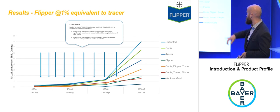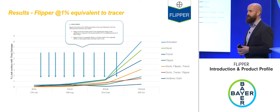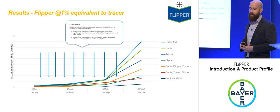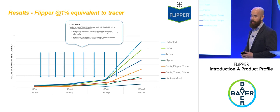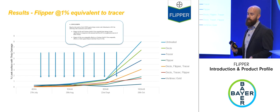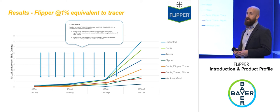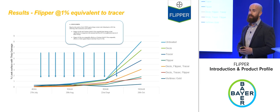The leeks trial results showed Desis providing very little control — clearly due to resistance — and also wiping out beneficial insects. Tracer (spinosad) also underperformed, again likely due to resistance. Flipper at one percent outperformed these conventional products significantly, illustrating why there is such enthusiasm for this product.